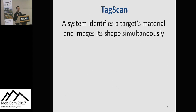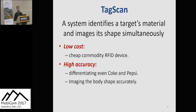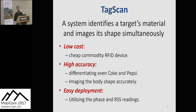Our system has three key advantages. First is no cost: TagScan works on cheap commodity RFID devices. Second is high accuracy: TagScan can even differentiate between Coke and Pepsi, and can image the human body shape accurately. Lastly, TagScan is easy to adopt — it works with the commonly available phase and RSS readings.